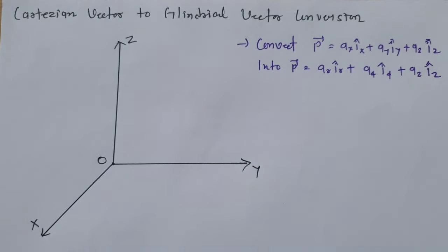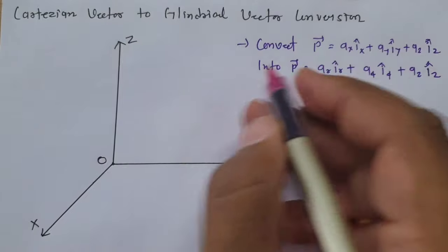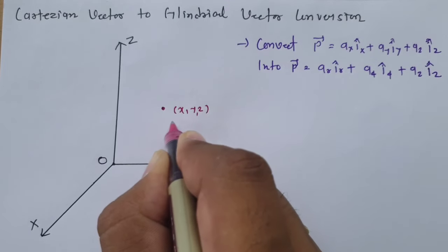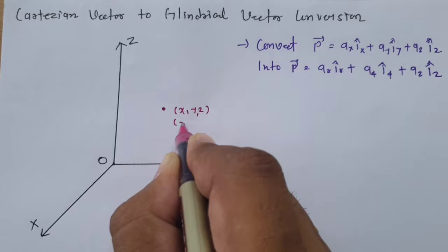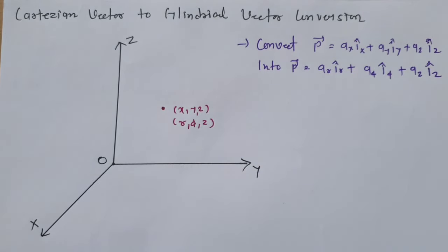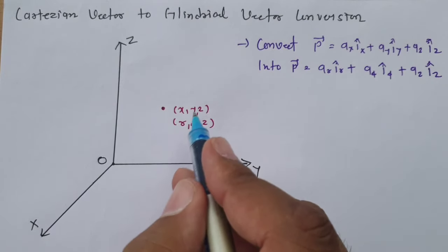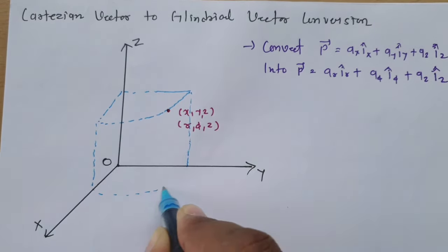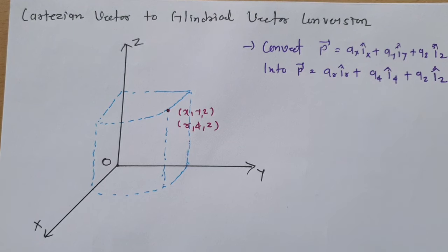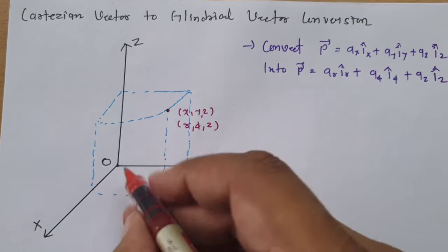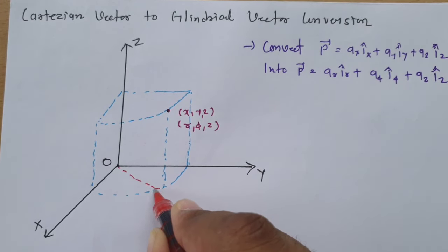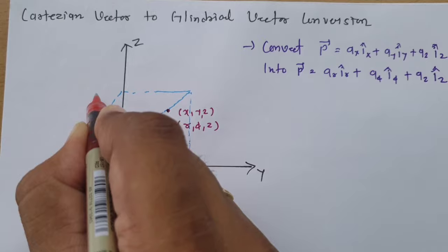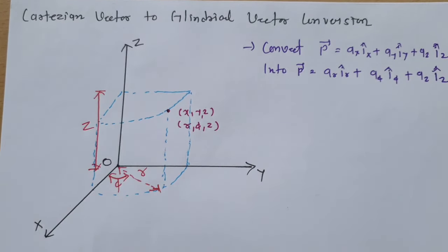First of all, we should know how the coordinate points are related. A point in Cartesian coordinates is (X, Y, Z), and in cylindrical coordinates it is (R, φ, Z). To understand R, φ, and Z, I will draw a quarter cylinder. In this quarter cylinder, R is the radius, φ is the angle, and Z is the length of the cylinder.